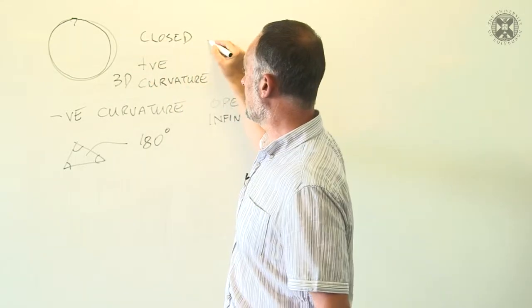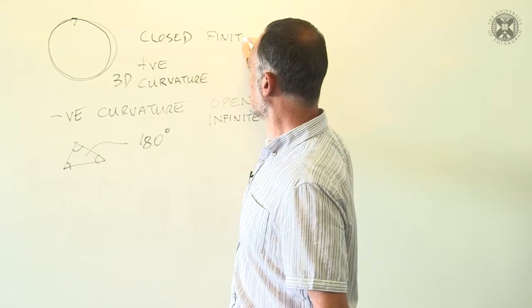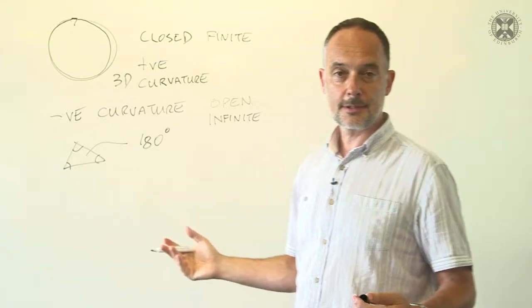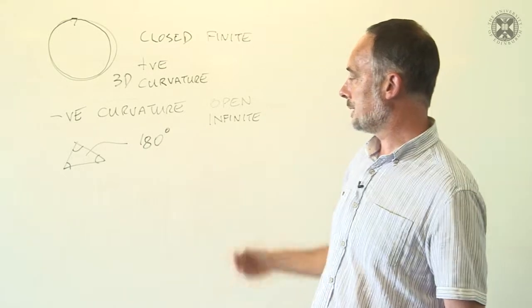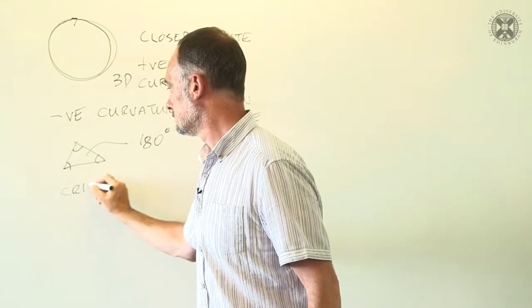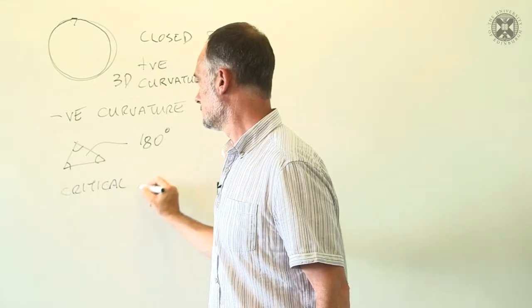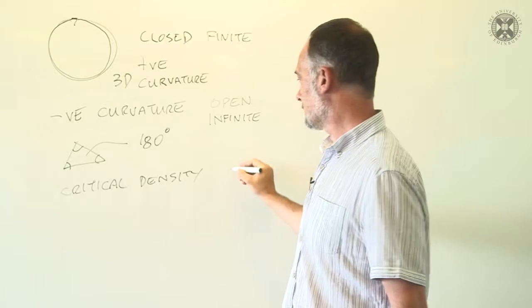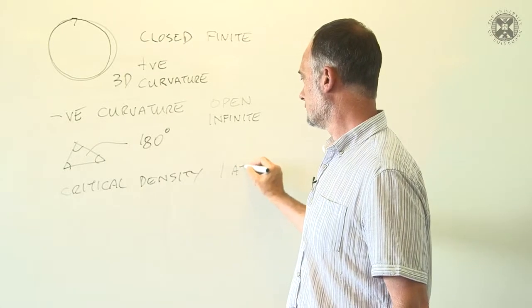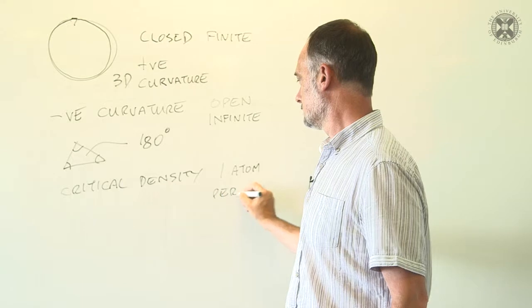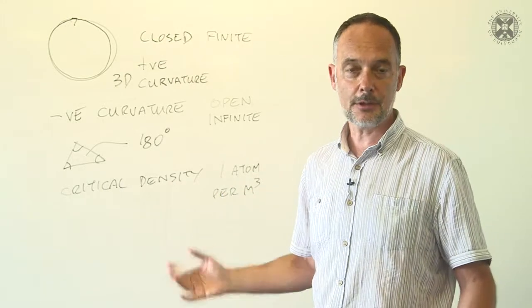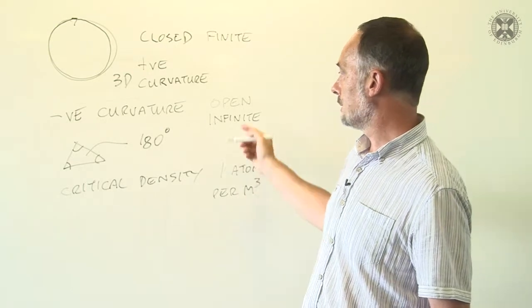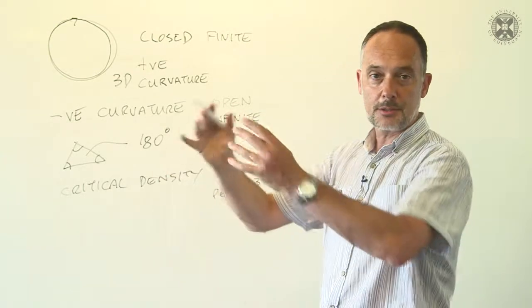So unlike a closed universe, which is finite, the universe of negative curvature would go on forever. And it's the density of the universe that turns one of these into another. There's a critical density, which is minute. It's about one atom per cubic meter. It's a better vacuum than we can make anywhere on Earth. But that's enough material to turn an open universe into one that closes back in on itself.